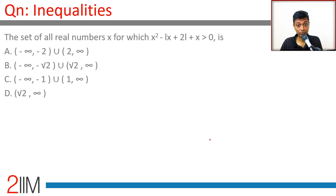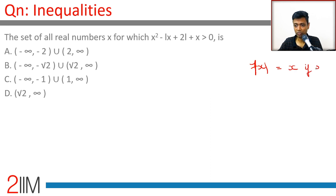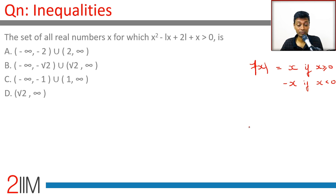Find the set of all real numbers x for which x² - |x+2| + x is greater than 0. These questions are approached with a simple idea: whenever you're dealing with modulus of x, modulus of x can be written as x if x is greater than or equal to 0, and as minus x if x is less than 0. Modulus of x is always positive.